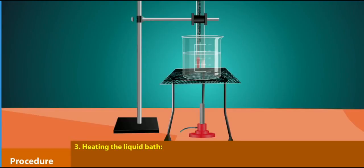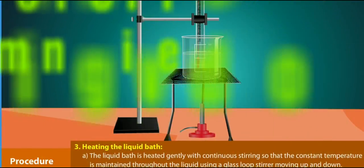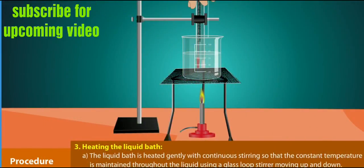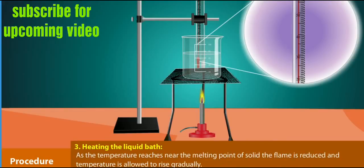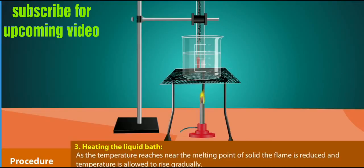Heating the liquid bath: The liquid bath is heated gently with continuous stirring so that the constant temperature is maintained throughout the liquid using a glass loop stirrer moving up and down. As the temperature reaches near the melting point of solid, the flame is reduced and the temperature is allowed to rise gradually.